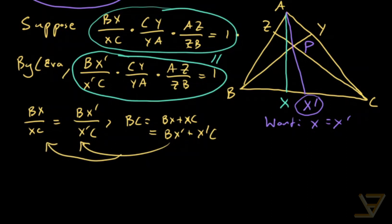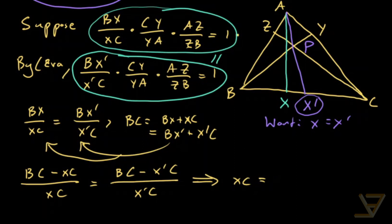We get that BC minus XC over XC is equal to BC minus X prime C over X prime C. And that immediately leads us into saying that XC is equal to X prime C.